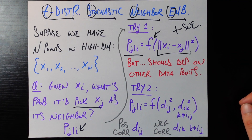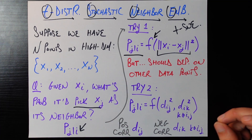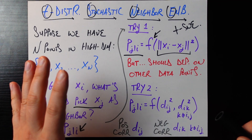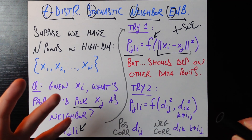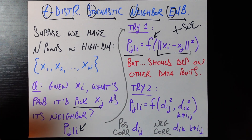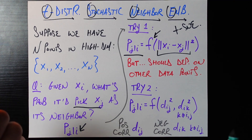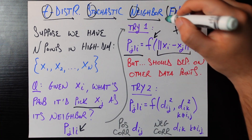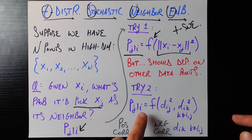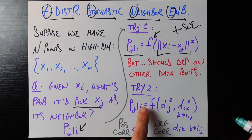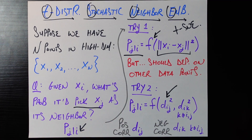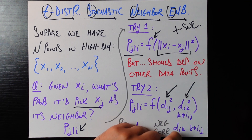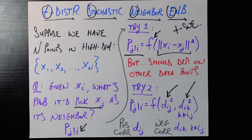The further data point xj is, the less likely I want to pick it as my neighbor. But this formulation ignores the fact that there are all these other data points in our data. Imagine you're xi and you're being asked who you're going to pick as your neighbor — I need to know information about all the other data points. So this probability is going to be a function of d_ij squared, the distance between i and j squared, and it will include information about all the other distances from i to all other data points, d_ik where k is not equal to i or j.